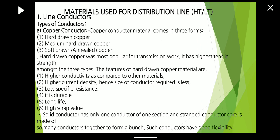Next are the types of conductors used as line conductors. The first conductor is the copper conductor. The copper conductor material comes in three forms: hard drawn copper, medium hard drawn copper, and soft drawn copper. Hard drawn copper is the most popular for transmission work.